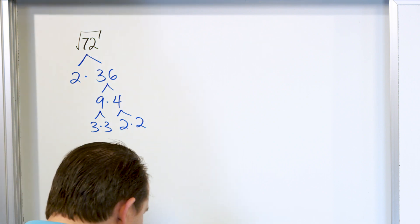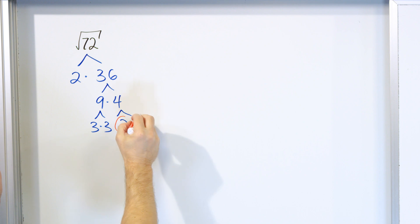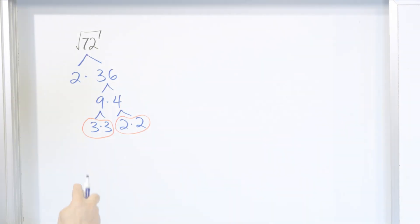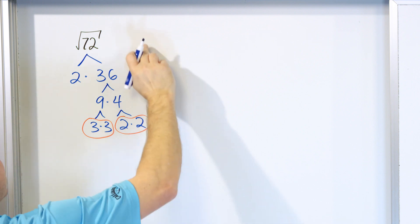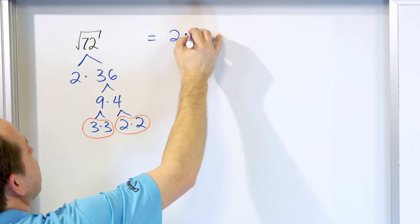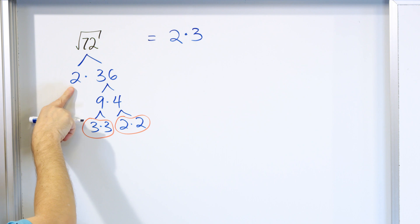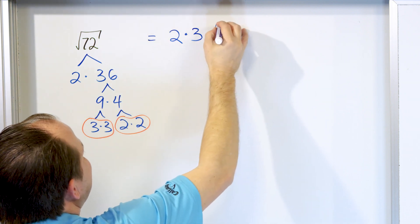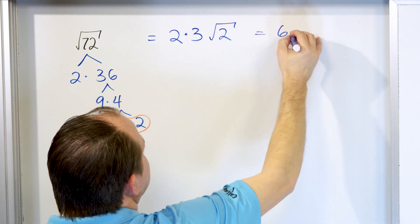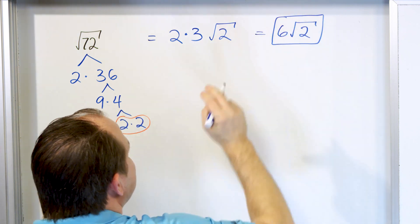Now this is a square root, so I'm looking for pairs of numbers. I see a pair of 2s and a pair of 3s. This 2, since we found a pair, comes out of the radical as a single 2. This 3 comes out as a single 3, and we multiply them together. This remaining 2 has no partner, so it stays under the radical. We get 2 times 3 equals 6, with the square root of 2 left over. The answer is 6 times the square root of 2.